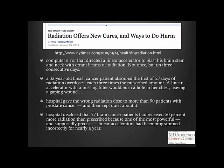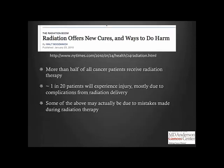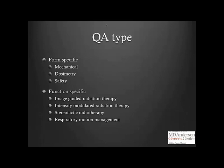More than half of all cancer patients receive some form of radiation therapy, whether external beam, brachy, or otherwise. Approximately one in 20 of these patients will experience injury, mostly from indications of safe radiation delivery, but some may be due to mistakes made during radiation therapy. An effective radiation QA program is therefore essential in ensuring safe and accurate delivery. QA can be both form-specific, such as mechanical and dosimetry aspects, or function-specific, covering image-guided radiation therapy, intensity modulated therapy, stereotactic radiation, and respiratory motion management.